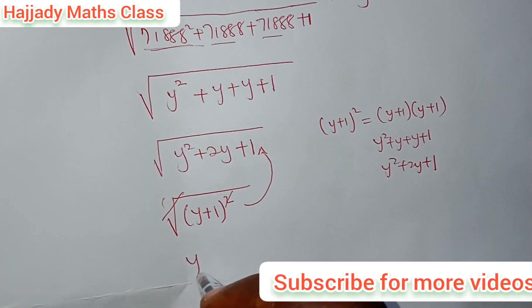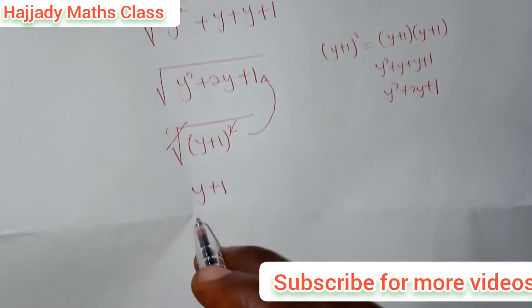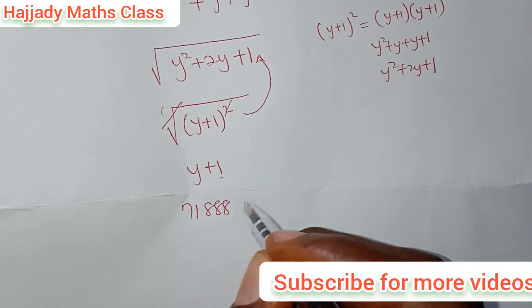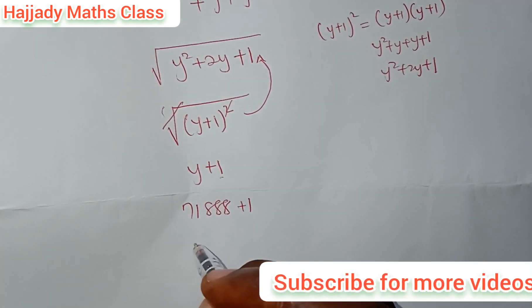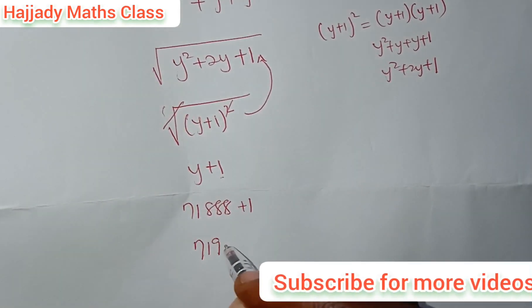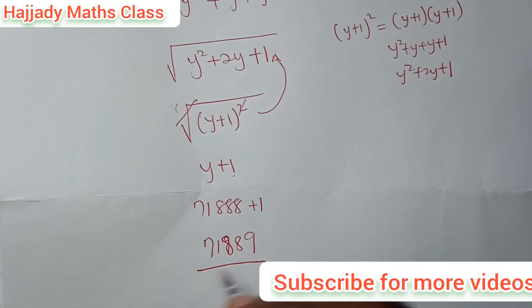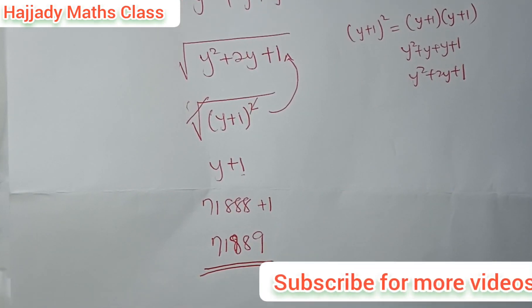So finally, we have our answer to be y plus 1. And don't forget that our y is 71888 plus 1. So finally, our final answer is 71889. That is the square root of the question given to us.